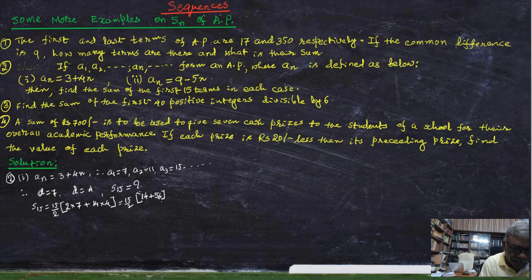14 plus 56, that is 15 into 35. Our answer is 525.